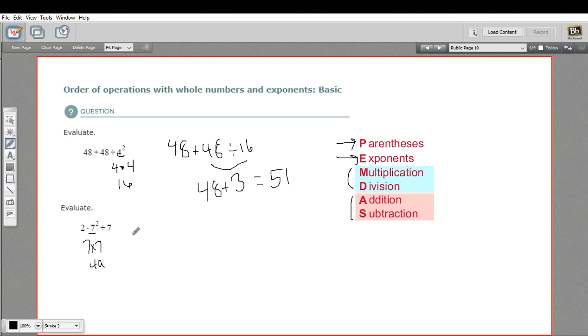So I can rewrite this problem as 2 times 49 divided by 7. Now I have a multiplication part and a division part. And even though we put the multiplication before the division here, it really doesn't matter what order you do those two in. So I'm going to choose to do this division first. 49 divided by 7 is 7.